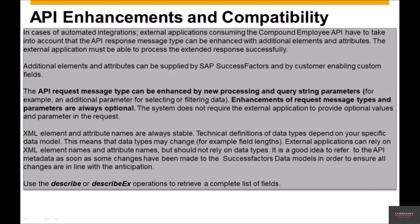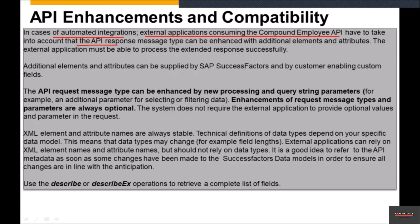With the Compound Employee API, if you go in the direction of coding the request and response structure in that traditional stub-and-skeleton sense, you need to be aware that the Compound Employee API response structure could change based on the request parameters you supply. In cases of automated integrations, external applications consuming the Compound Employee API must account for the fact that the API response message type can be enhanced with additional elements and attributes, and the external application must be able to process the extended response successfully.